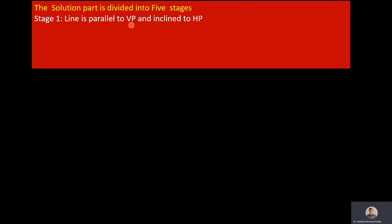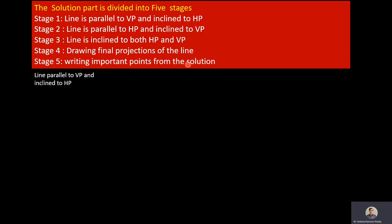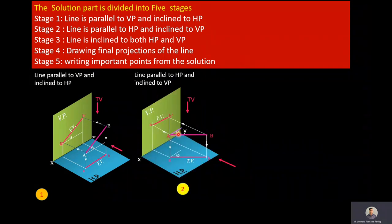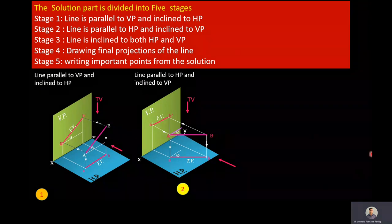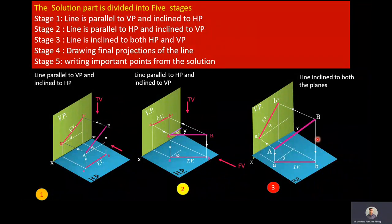The solution is divided into five stages. Stage 1: line is parallel to VP and inclined to HP. Stage 2: line is parallel to HP and inclined to VP. Stage 3: line is inclined to both HP and VP. Stage 4: drawing final projections of the line. Stage 5: writing important points from the solution. Pictorial representations show the line in each of these three positions.